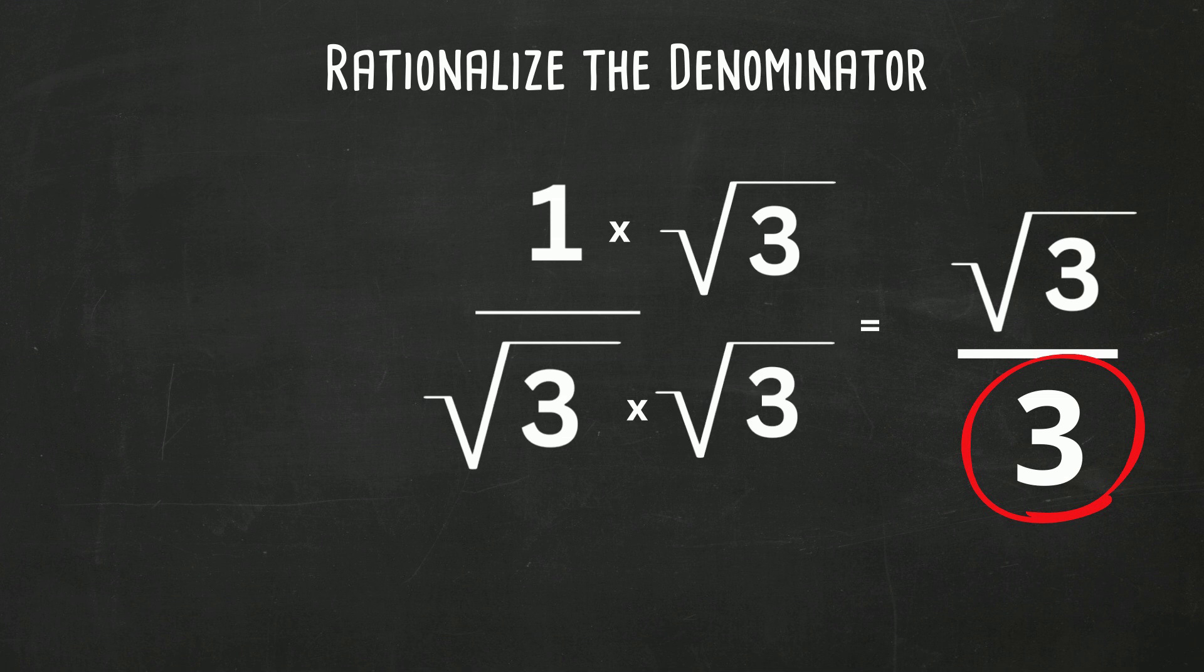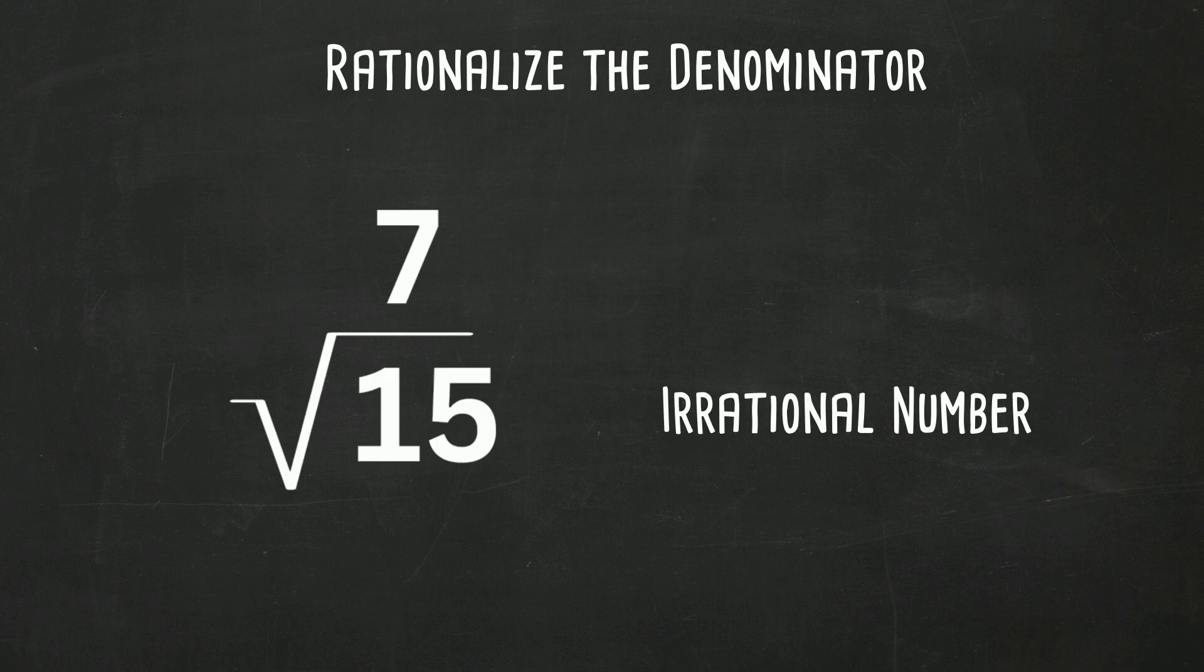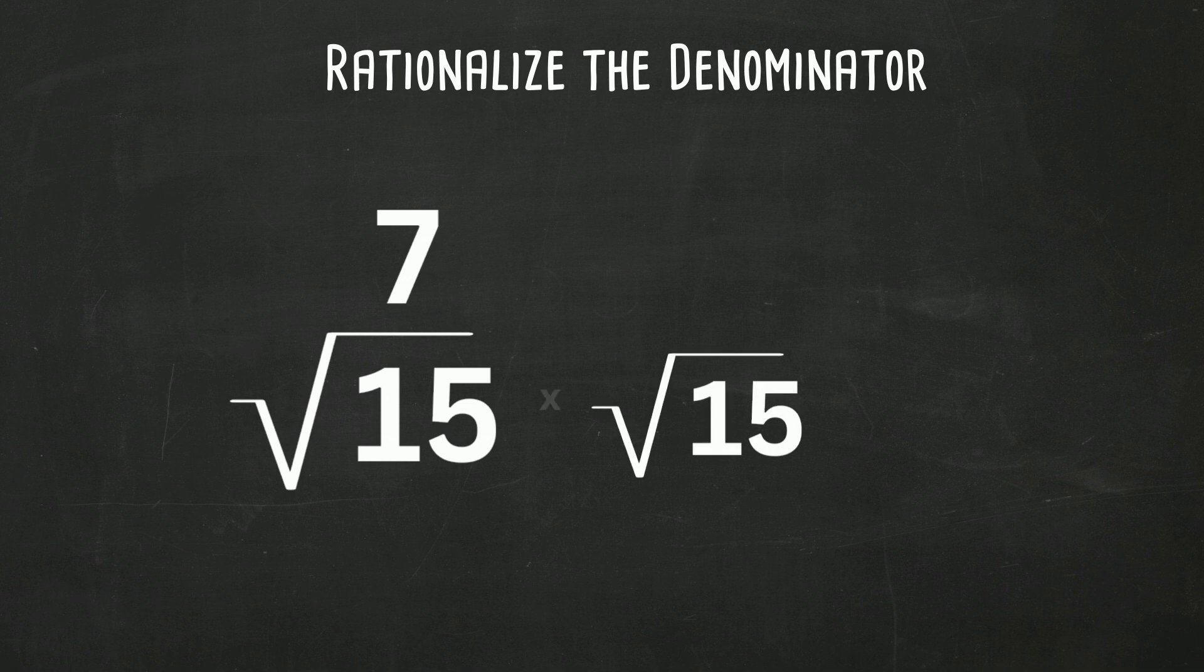Let's look at another example. We have 7 over the square root of 15. We're going to do the same technique. We know that the square root of 15 times the square root of 15 is the square root of 225, which is a perfect square.